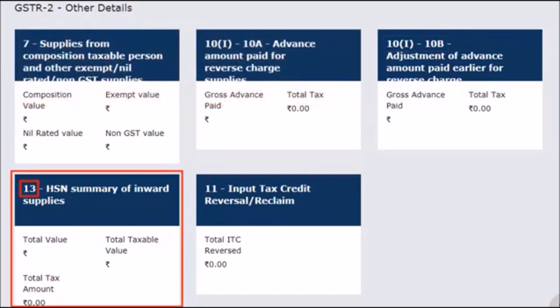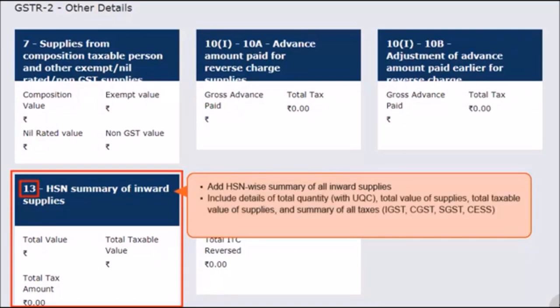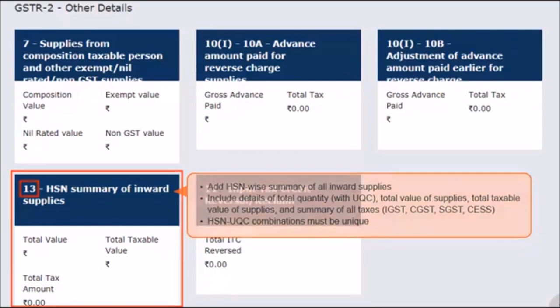In the next tile of Section 13, you need to add the HSN-wise summary of all inward supplies. This should include details of the total quantity along with unique quantity code UQC, total value of supplies, total taxable value of supplies, and all the taxes, i.e., IGST, CGST, SGST, and CES paid on the inward supply. Please make sure that the HSN-UQC combination is unique.